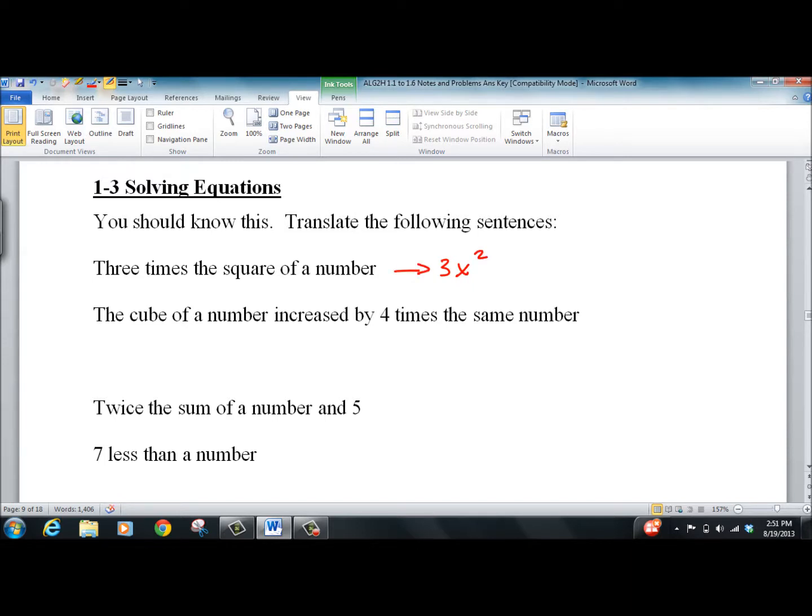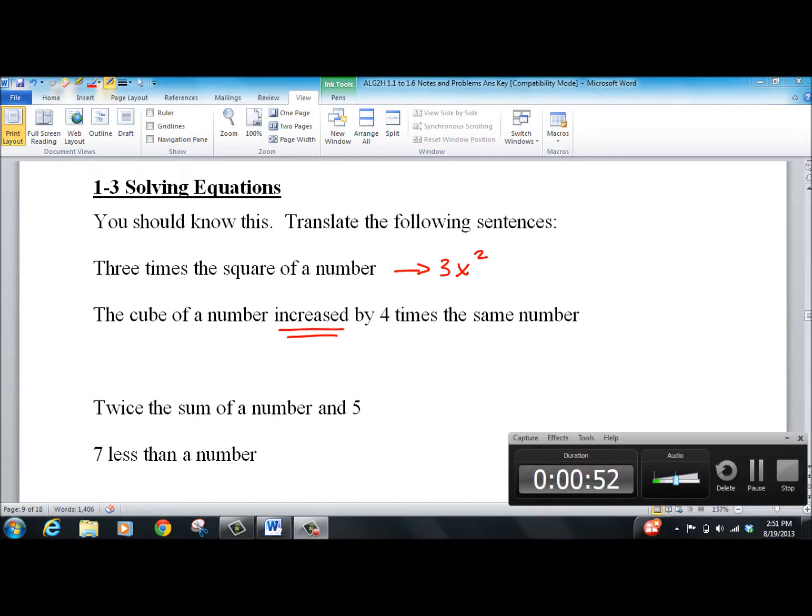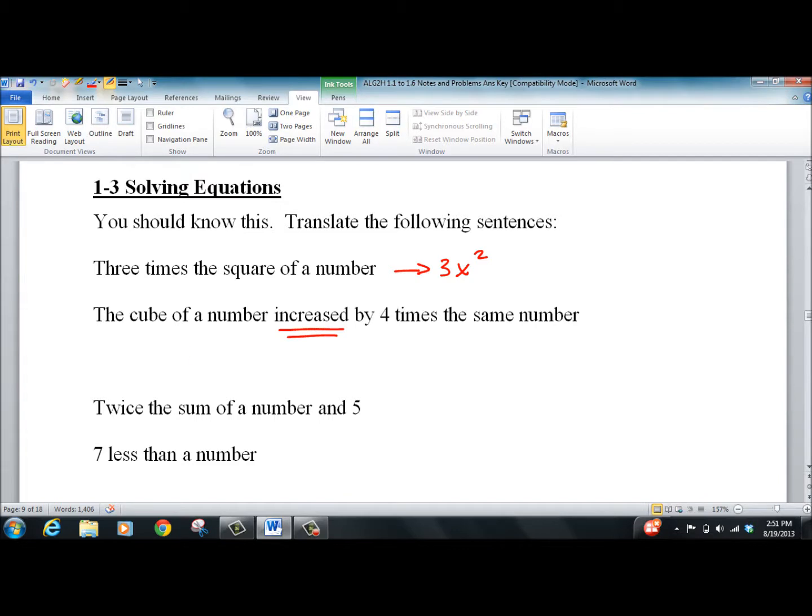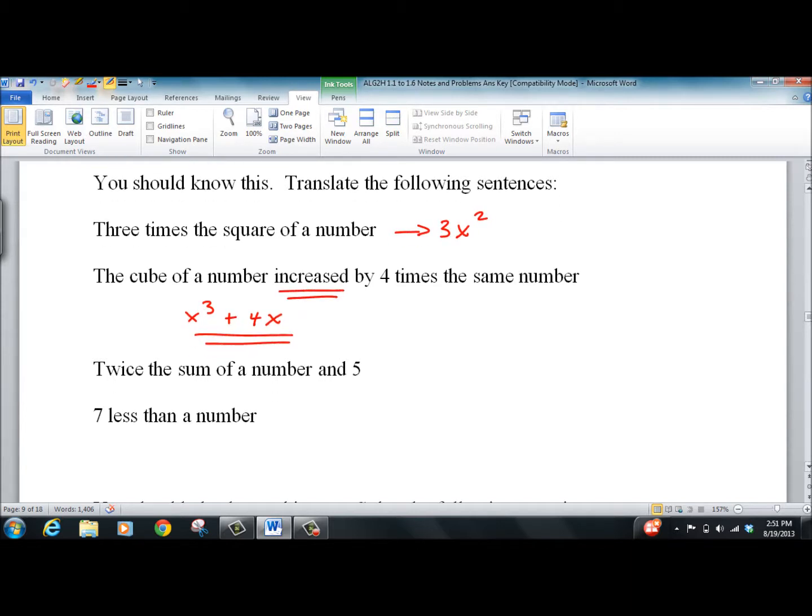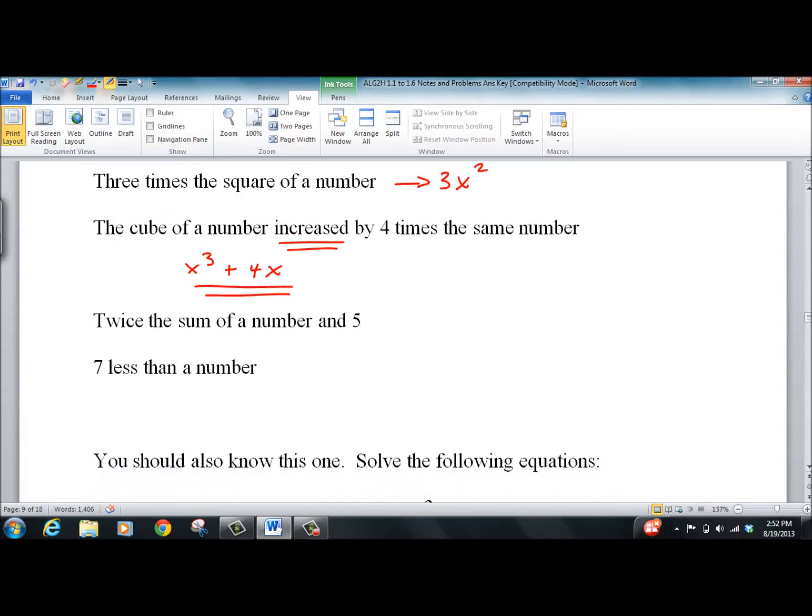The cube of a number increased by 4 times the same number. Increase is a tricky one. Is it multiply or plus? Well, I'm not even sure, to be honest with you. Let's do the cube of a number. The cube of a number increased by 4 times the same number. I believe that's going to be x³ + 4x. And these are a little bit artificial, so let's not get carried away with the general concept of translating words to math. When we have a real problem, it's kind of a done on the fly thing. It really just takes a lot of practice.